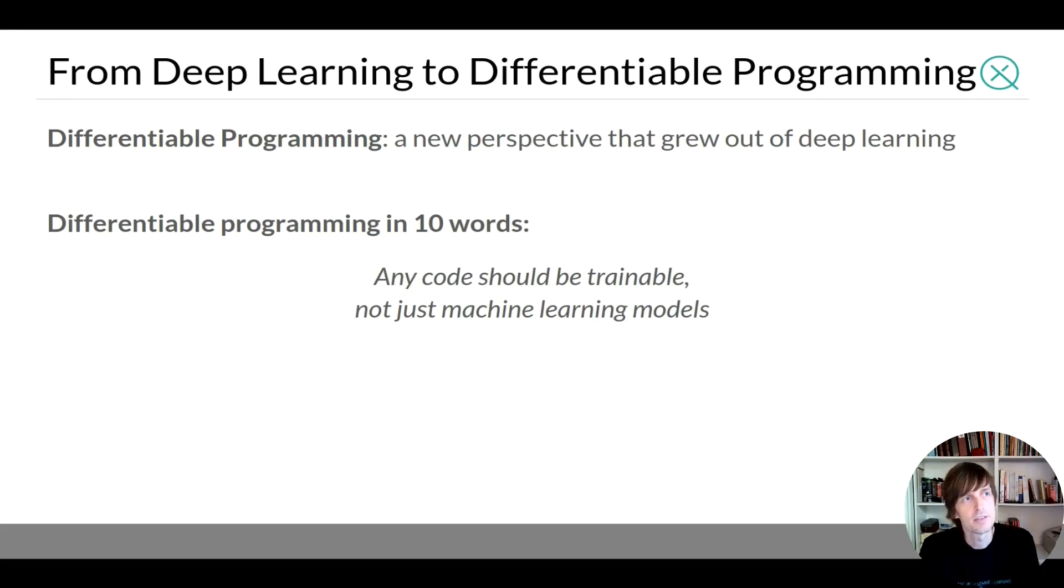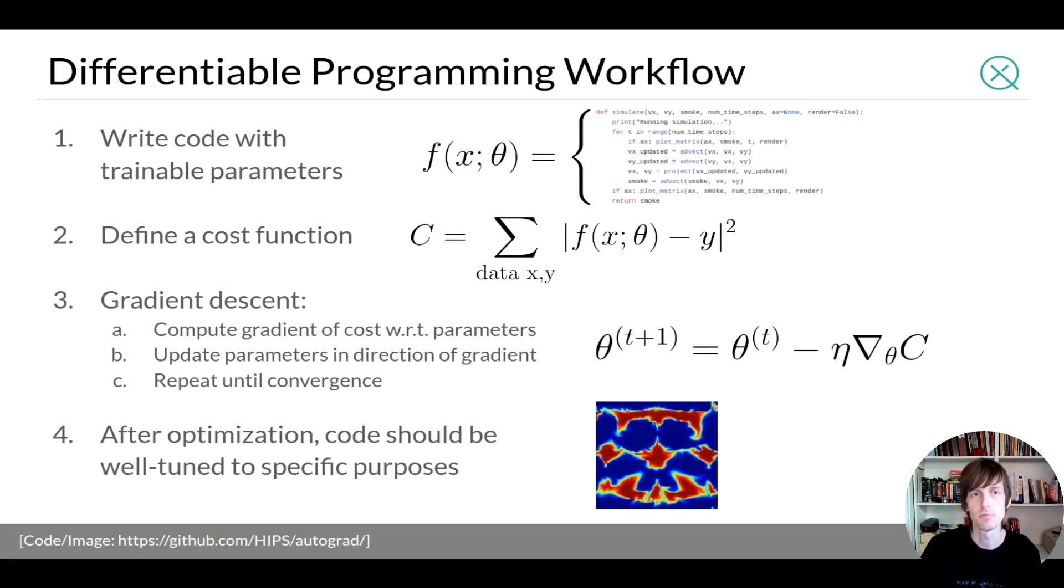So I want to actually say that there's something deeper than deep learning. It's called differentiable programming. This is something that deep learning falls under but actually you can think of it a bit more broadly. So the basic idea behind differentiable programming is the following: Any code should be trainable not just machine learning models. So how does a differentiable program differ from a deep learning model? Well the idea here is that your function is not just a neural network but it's arbitrary code. It should be numeric code it should be differentiable because we want to train it but it could be code for instance written in python.